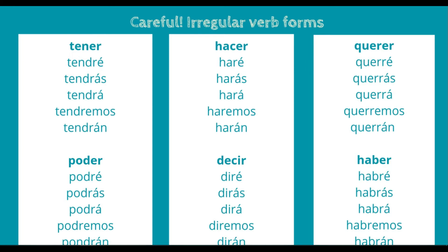And the last irregular verb is haber — we change to: habré, habrás, habrá, habremos, habrán. These are a few of the irregular verb forms for the futuro simple.